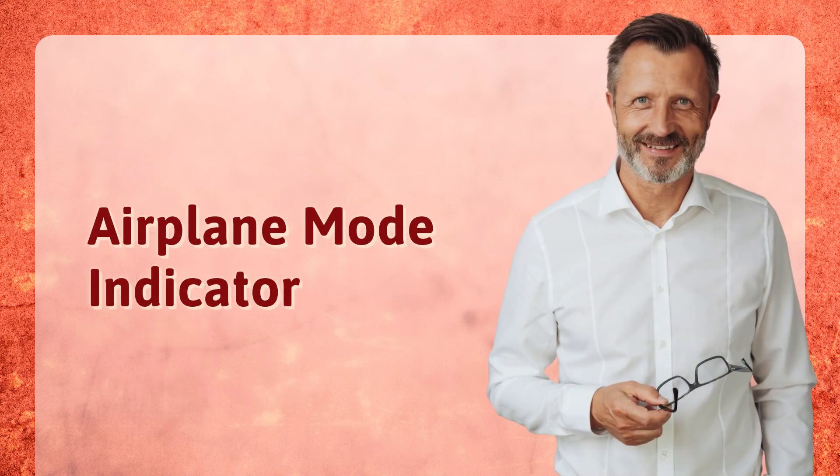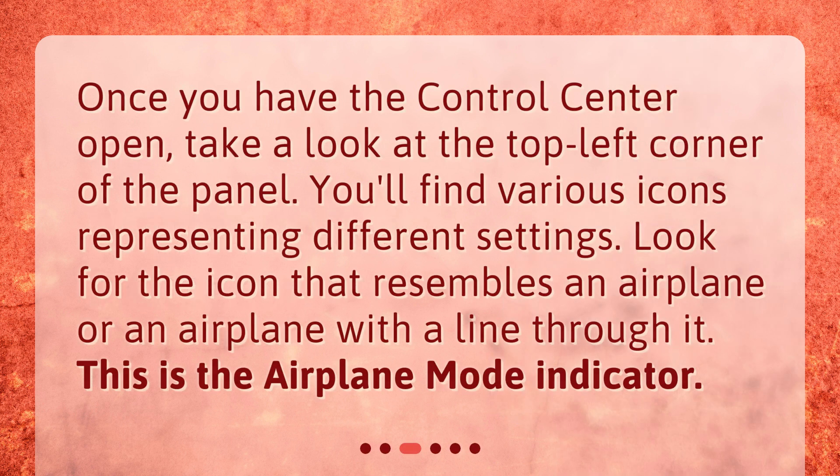Airplane Mode Indicator. Once you have the Control Center open, take a look at the top left corner of the panel. You'll find various icons representing different settings. Look for the icon that resembles an airplane or an airplane with a line through it. This is the airplane mode indicator.